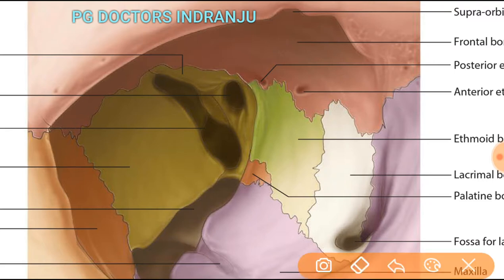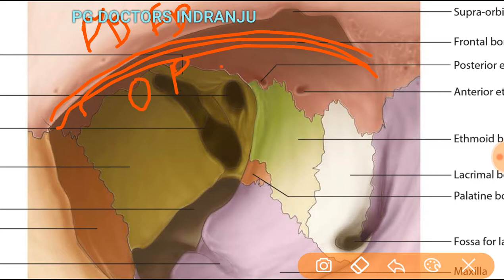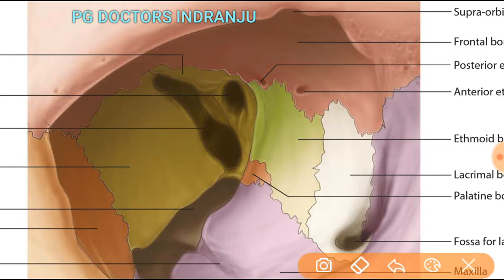The superior wall or roof is formed mainly by the orbital plate of the frontal bone. If you look inside toward the apex, there is also a part of the frontal bone which forms the lesser wing of the sphenoid. So the superior wall is formed by the orbital plate of the frontal bone and the lesser wing of the sphenoid bone.